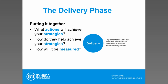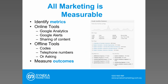Ensure there is overall project management that enables that integration of copy and design. This brings us to the delivery phase — putting everything together. What actions will achieve your strategies, and most importantly how is it measured? Every form of marketing is measurable — you can identify the metrics you want to measure. In the online world it tends to be relatively easy: tools like Google Analytics, Google Alerts for news articles, and measuring the sharing of content on social media. In the offline world, you can use codes within marketing materials, posters, and brochures, or specialised telephone numbers to track inquiries through a specific promotion — or simply ask.